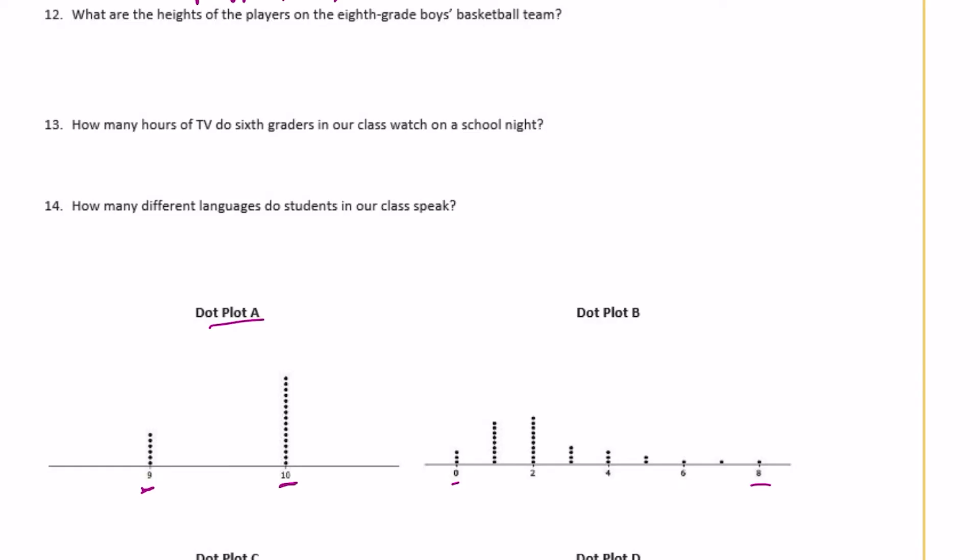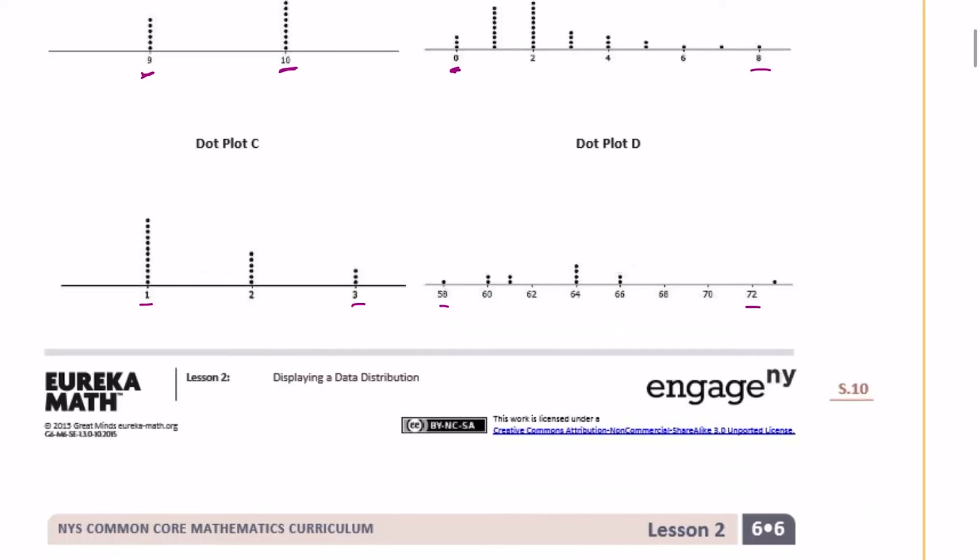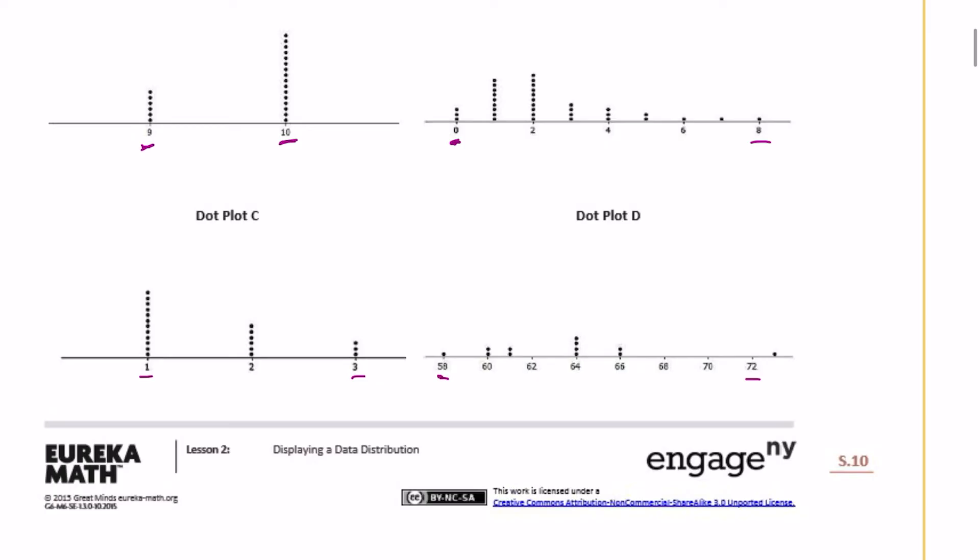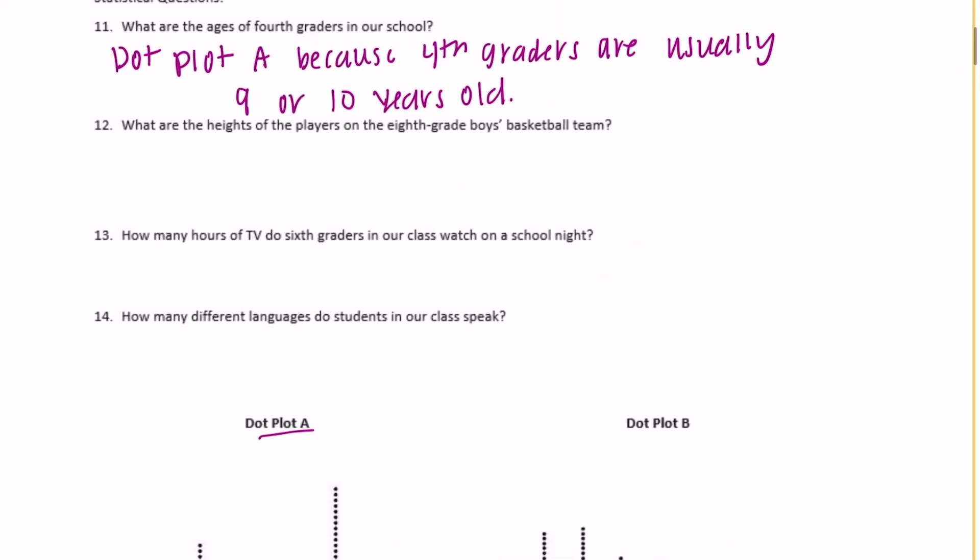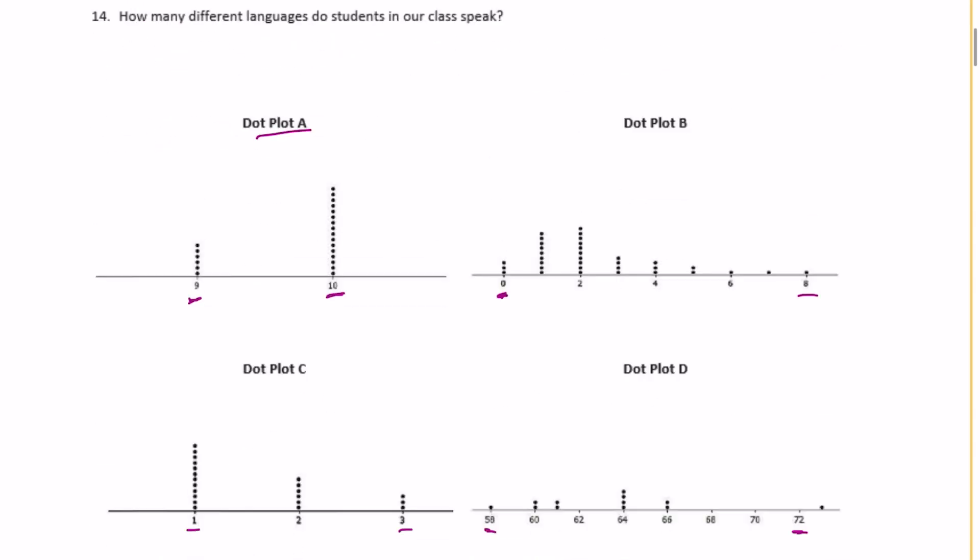Okay, 12. What are the heights of the players on the eighth grade boys basketball team? So we're looking for heights. So I don't think anything that's like zero, I don't know, nobody has zero height, right? You wouldn't be here. So dot plot B doesn't make sense. One, two, or three feet. That also, it's a pretty short eighth grade boys basketball team. Or it looks like this one, 58 to 72. That's probably measured in inches. So that makes more sense. That's around like four, five, six feet. So let's go with dot plot D. Because the team is probably measured in inches between 58 inches and 72 inches. Okay, there's a 73.